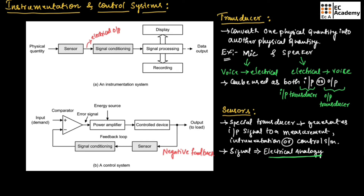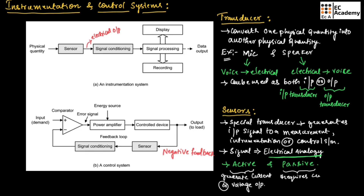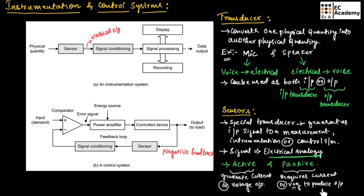Sensors can be categorized as active sensors and passive sensors. An active sensor will generate a current or voltage output by itself. A passive sensor requires current or voltage from an external source to produce output — it takes current or voltage from the external source and modifies those to produce the output.